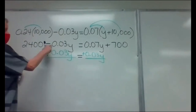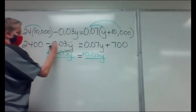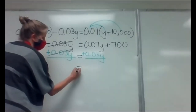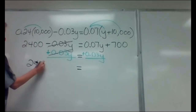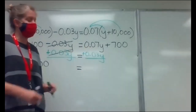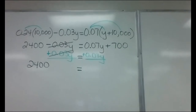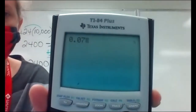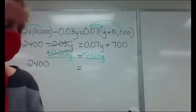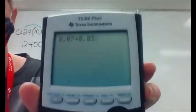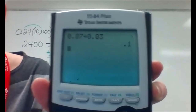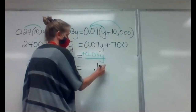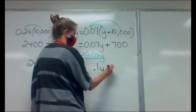So this is gone — the minus plus of the same thing cancelled out. All that's left on the left is 2,400. On the right, I need to add those Y's together: 0.07 plus 0.03 — type that in — gives me 0.1. So when I added the Y's together I got 0.1Y. Bring down my plus 700.